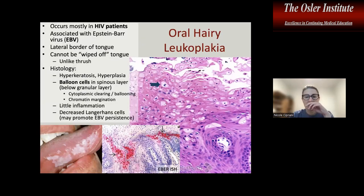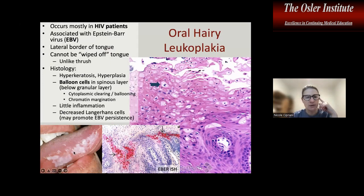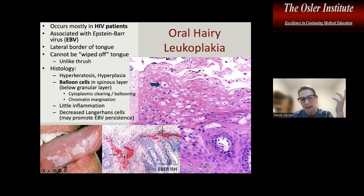For infectious diseases, there is oral hairy leukoplakia, which occurs in association with Epstein-Barr virus, generally in immunocompromised people on the lateral border of the tongue. It cannot be wiped off and therefore undergoes biopsy. The characteristic findings are balloon cells in the epithelium where the cytoplasm around the nuclei becomes white or pale. Applying EBV EBER in situ hybridization will highlight those balloon cells, which is diagnostic of oral hairy leukoplakia.